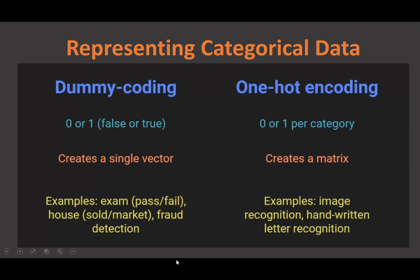Dummy coding assigns a value of zero or one — for example, a student pass or fail, whether something is sold in the market, or fraud detection yes or no. In the computer, it creates a single vector. One-hot encoding is similar to dummy encoding but combines one or more dummy encodings to create a matrix. Examples include image recognition and handwritten letter recognition.